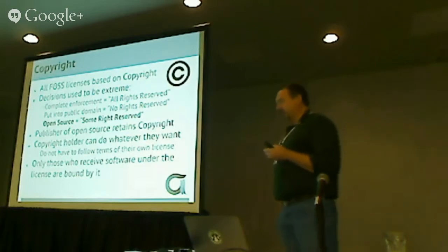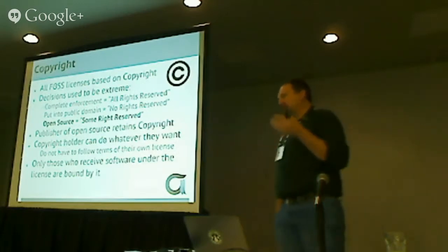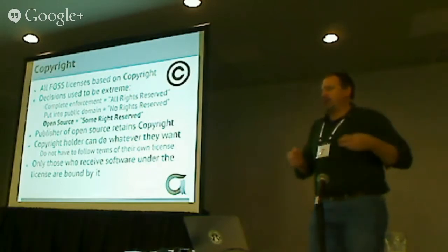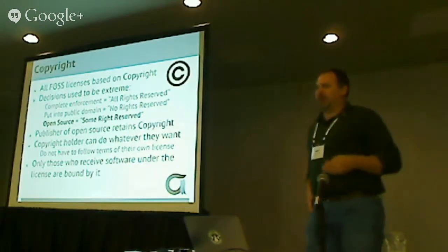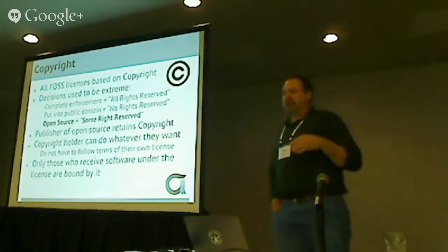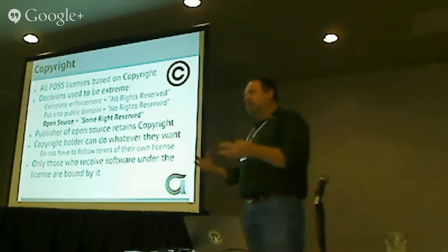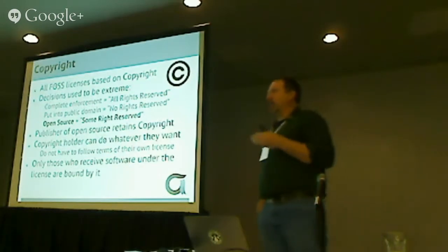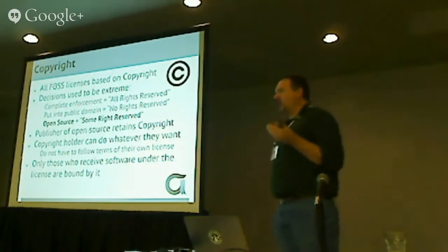We need to talk about copyright because it's really the foundation on which all open source licensing is built. Before free software and open source came along, software licensing was very binary — either closed and proprietary with all rights reserved, or public domain where people put stuff out and said no rights reserved. The idea of open source is there are some rights that are reserved. We're giving you some rights to the software but not complete freedom to do absolutely anything. We retain the copyright, and the license will have rules that you have to follow. Those rules have to comply with the open source definition, but there are still rules in all these licenses.